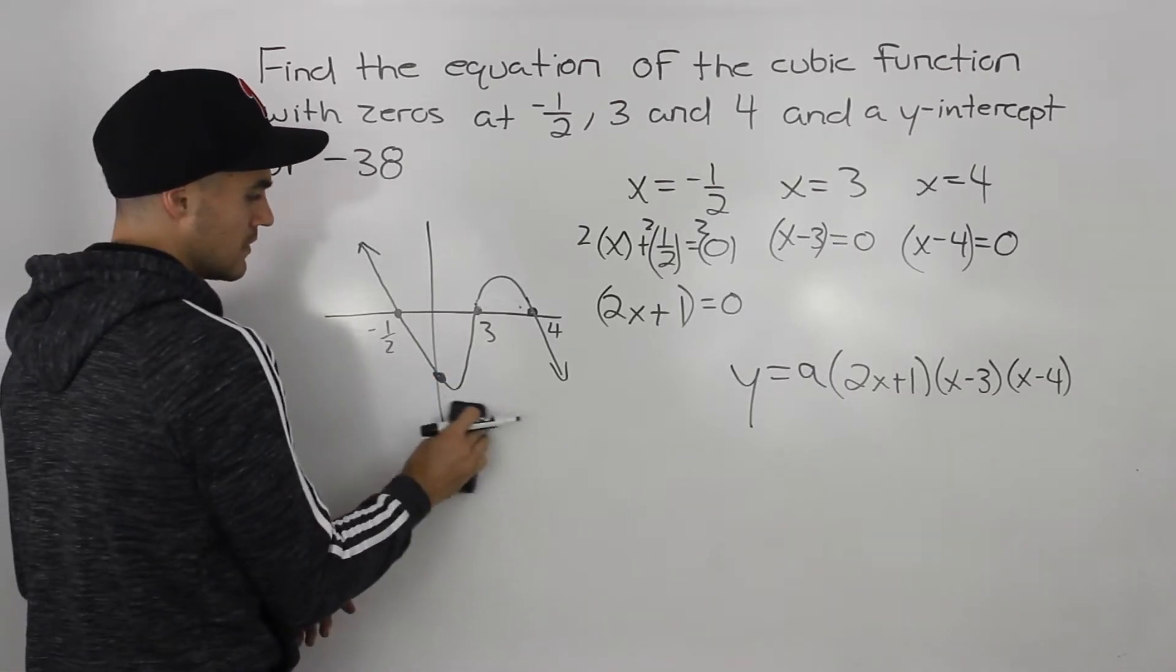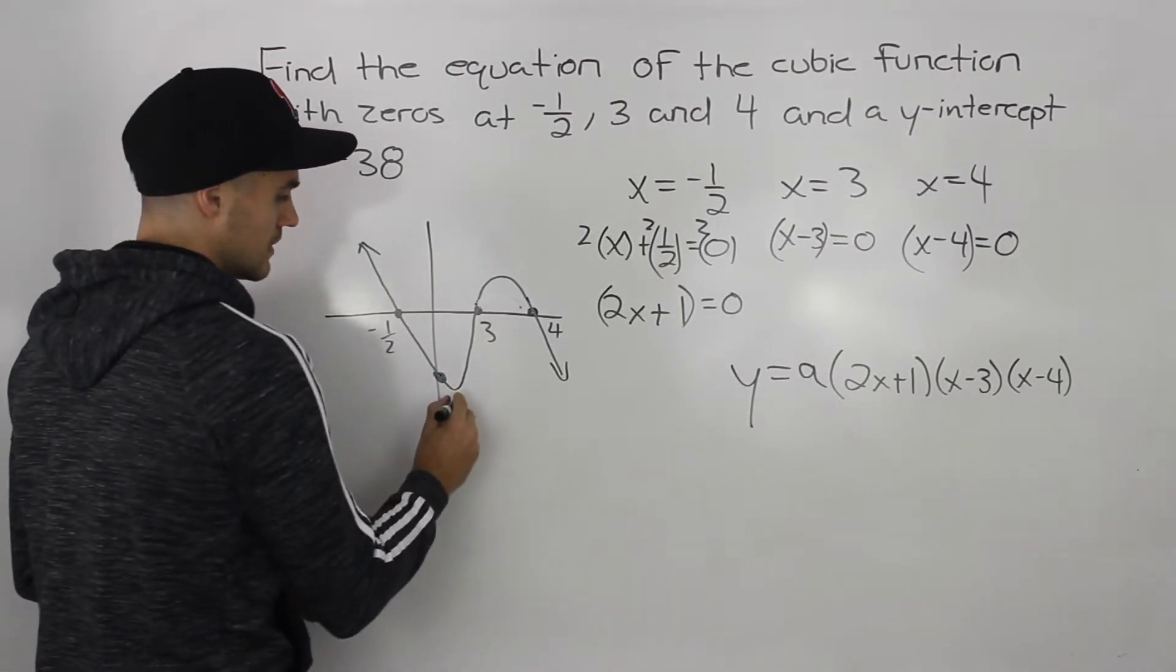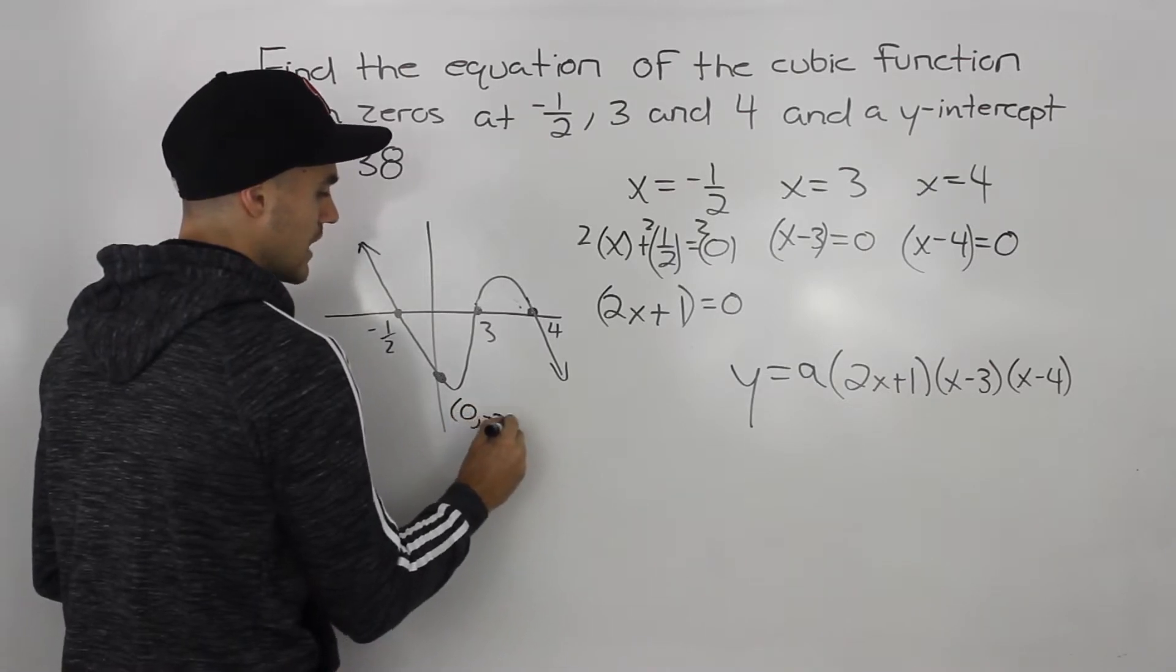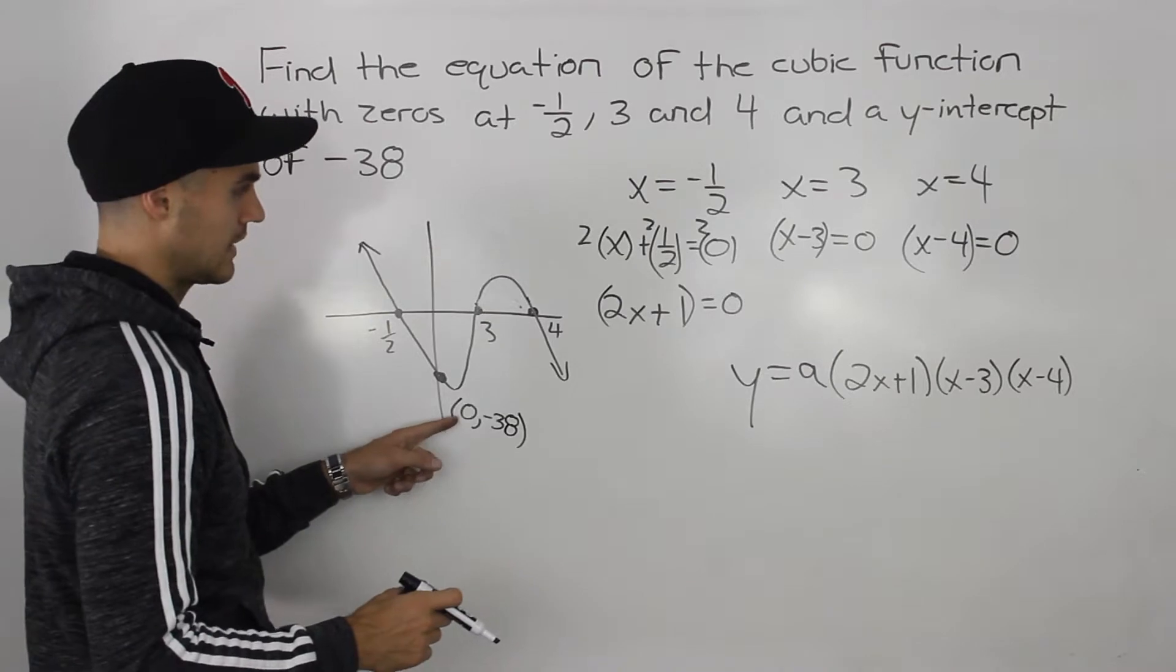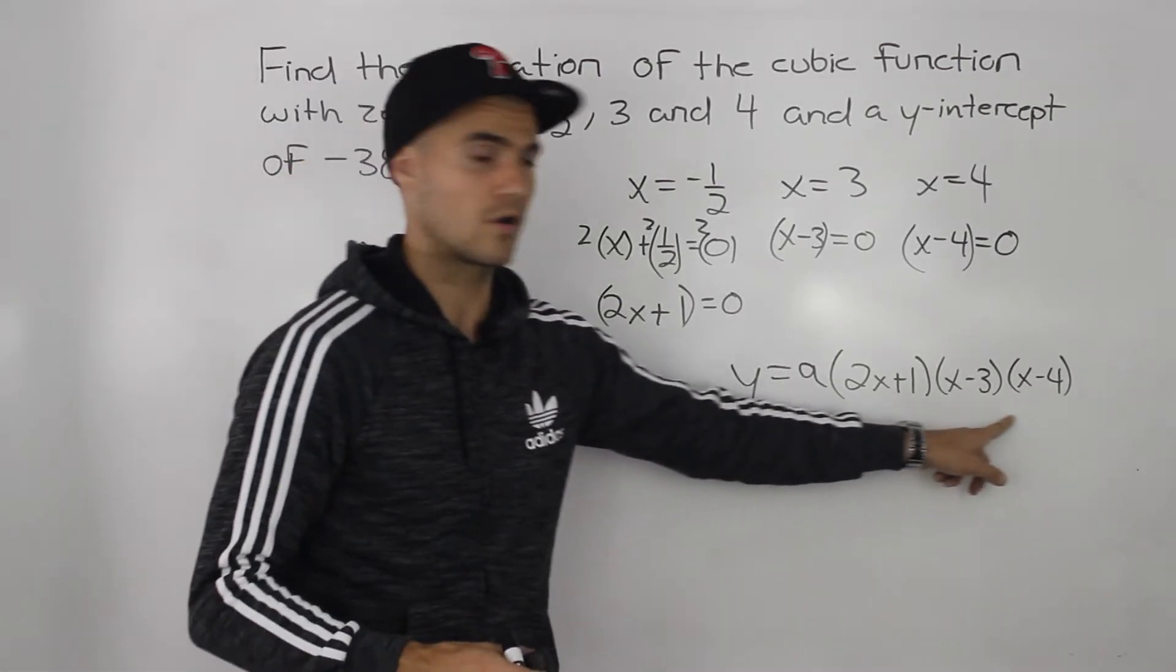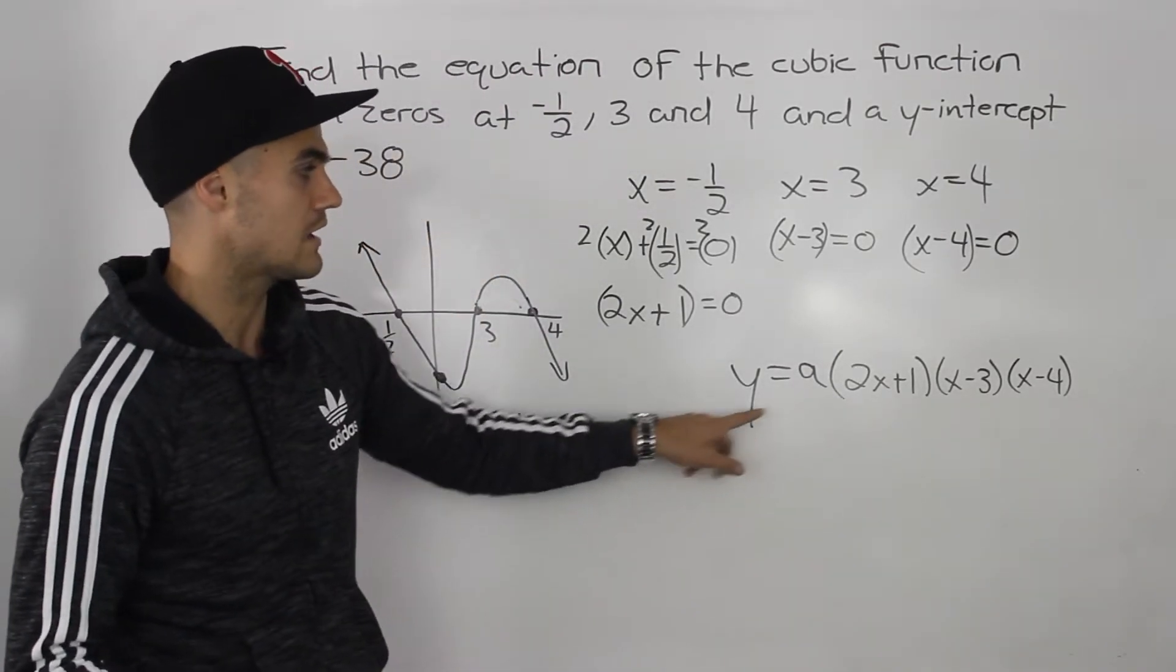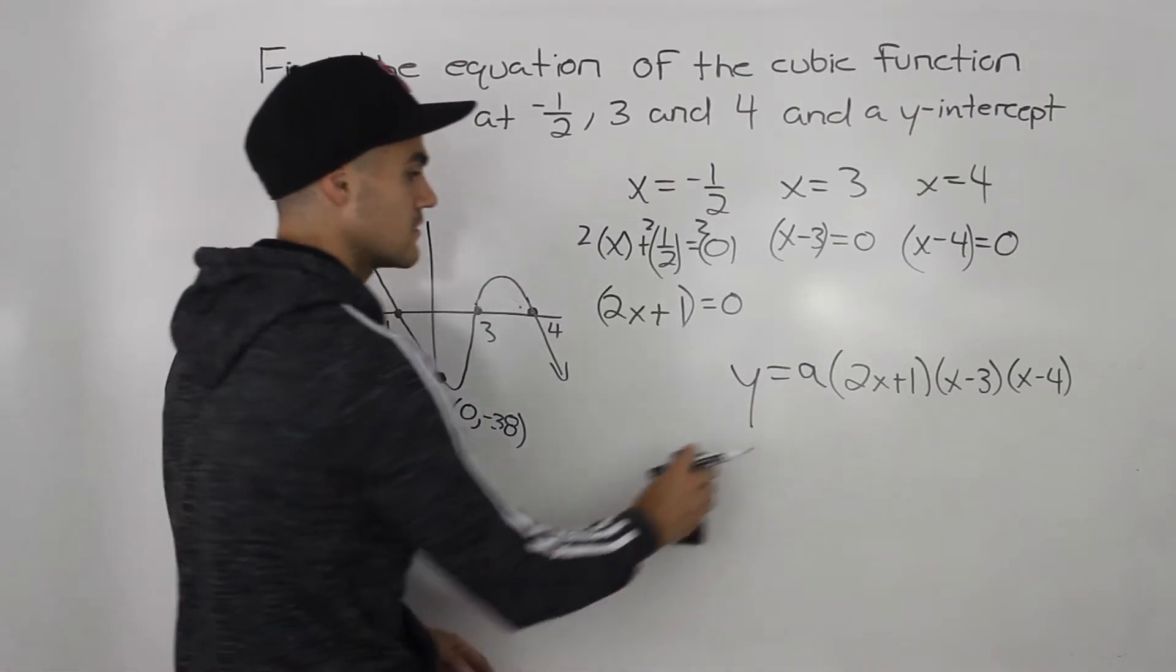So this y-intercept, the coordinate of it, is zero and negative 38. So what we can do is we can plug in an x value of zero for all the x's here, and then a y value of negative 38, and then solve for that a value.